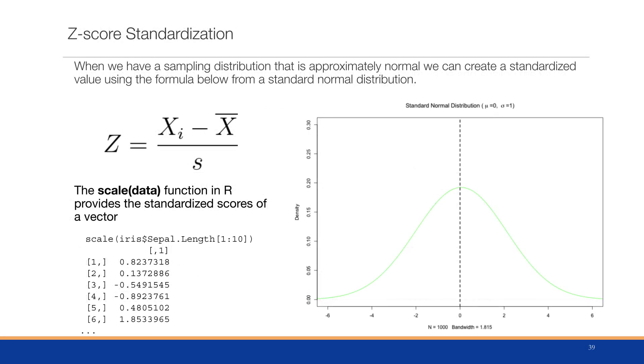Now, another way to rescale our data is to do standardization. If we have a sampling distribution that is approximately normal, we can create a standardized value using this formula here. We have each observation, xi, and we subtract the mean. And we divide by the sample standard deviation.